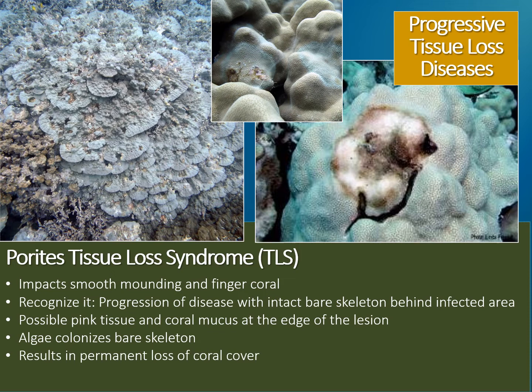The third category of coral diseases are the progressive tissue loss diseases, which can lead to more severe loss in coral cover and should be reported to the Eyes of the Reef Network. Parites Tissue Loss Syndrome (TLS) is fairly common around the Hawaiian Islands, affecting smooth mounding or finger coral. This disease can be recognized by a typically round or circular lesion with a leading edge of bare white coral skeleton. As the disease advances, algae colonizes any exposed skeleton within several days, so algal turf is often visible where the disease has already passed. Where the disease is actively advancing, the coral tissue might be pink or white, and coral mucus might be visible around the leading edge. While this disease often progresses slowly and seasonally, it can result in permanent loss in coral cover.